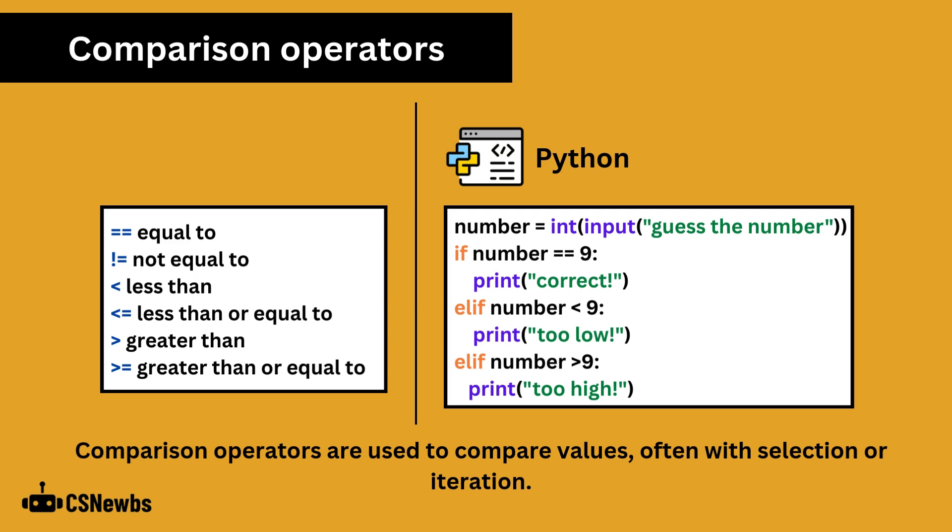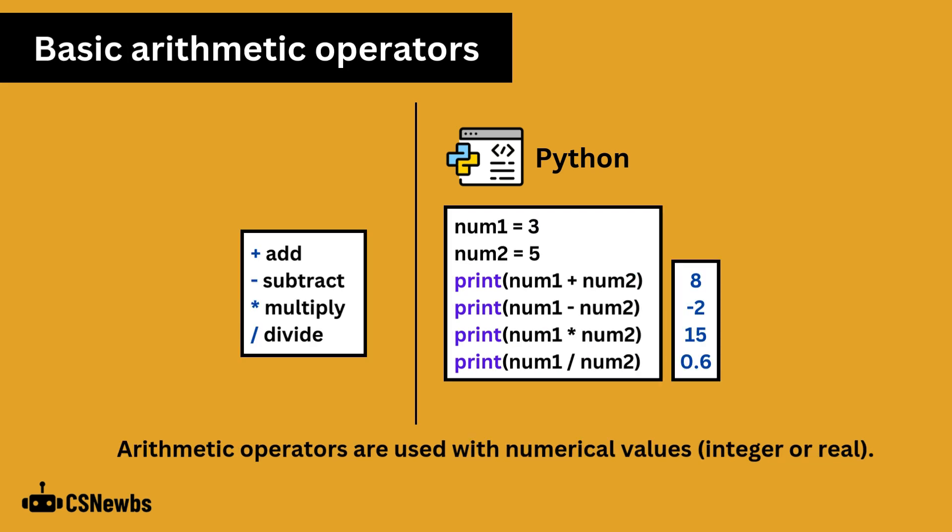It is vital that you don't make a silly mistake such as getting your less than and greater than signs mixed up. Arithmetic operators are used with numerical values such as an integer or real. Add, subtract, multiply, and divide are the four that you need to know.